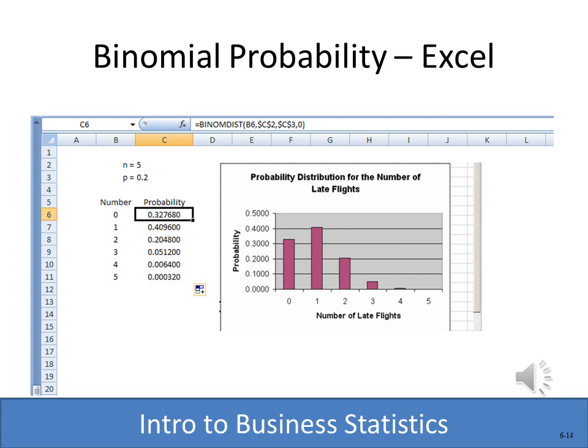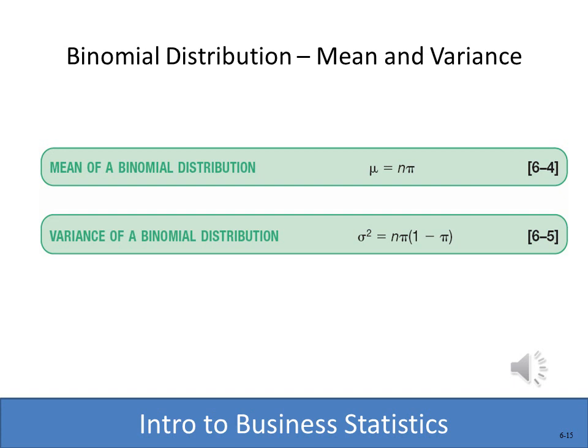This slide shows the same problem solved in Excel. We have a cell for n and a cell for the probability P. The function used is BINOM.DIST — the name may vary slightly depending on your Excel version. The function asks for x, the number of trials, and the probability. The zero at the end stands for non-cumulative. If we used a one instead, it would add up cumulative probabilities. For individual success probabilities we use zero. Please check the Excel tutorials included with this lesson for more details.